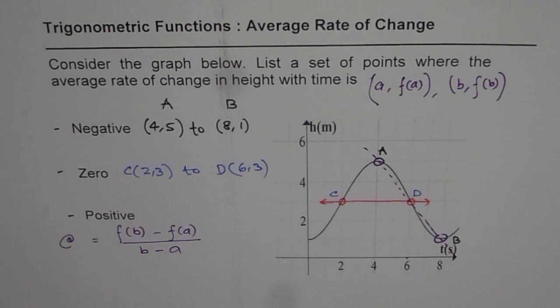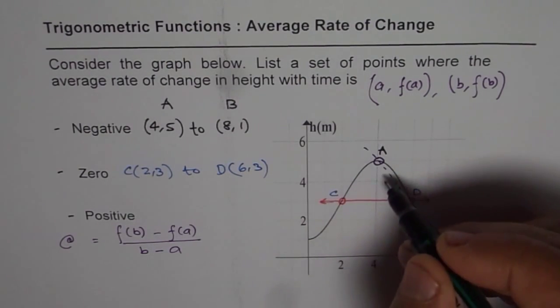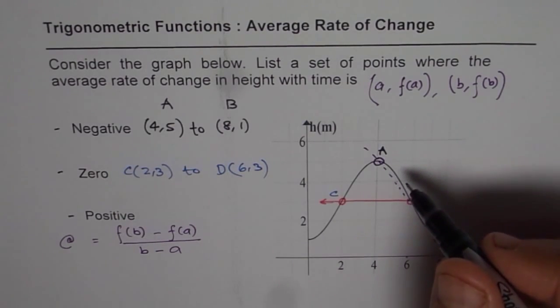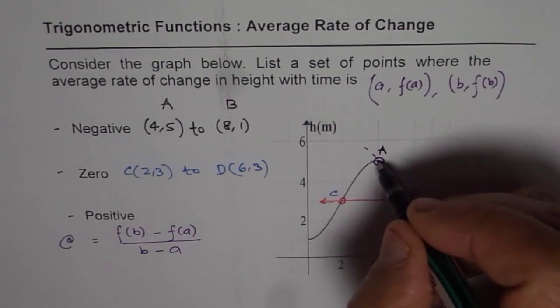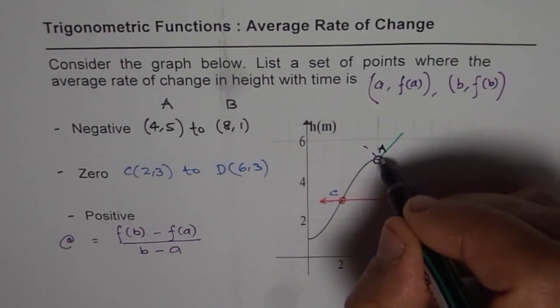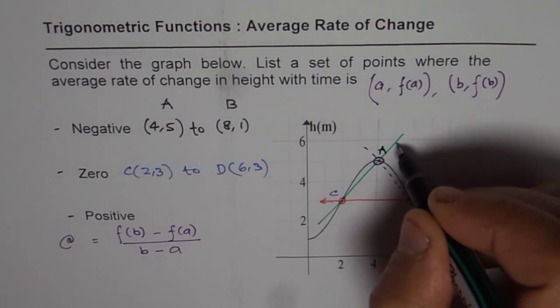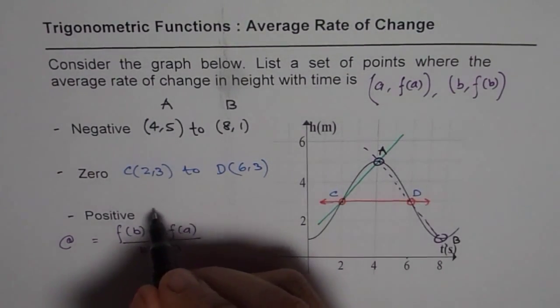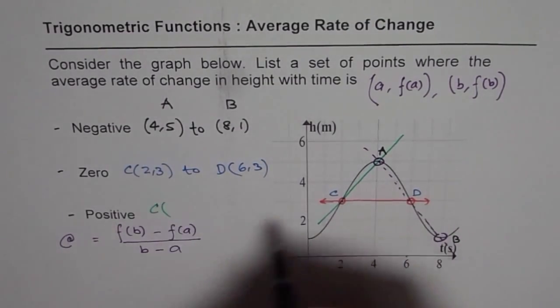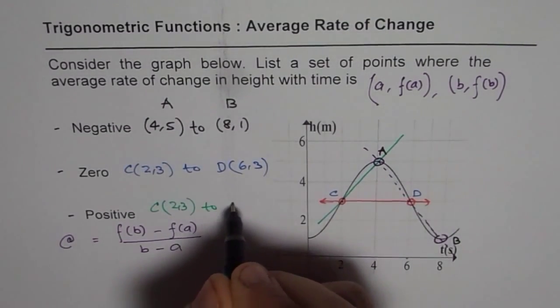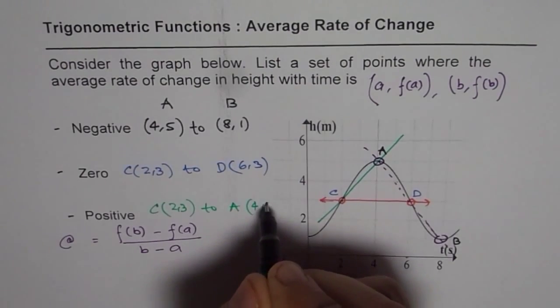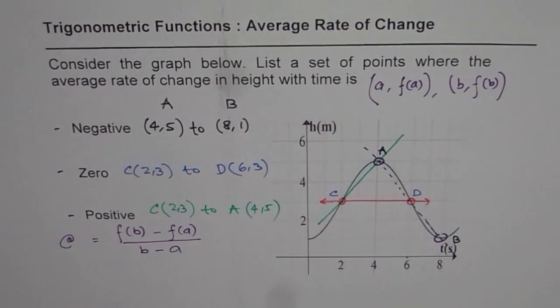And now for positive, what we can do is, we can select points which, when joined, will give you a rising line. So we could also select C and A, for example. So if you select C and A, it gives you a positive line. So the points could be C as (2,3), we already have it, to A which is (4,5).